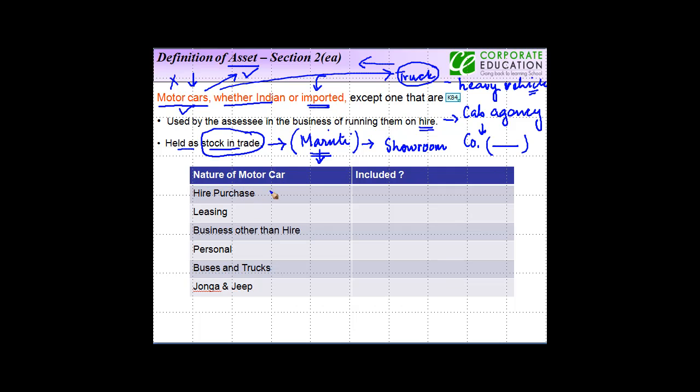So let us see certain other cases. Nature of motor car basically refers to a transaction. Now, whether or not it is included, that we will see. So the first one that we have here is the case of hire purchase. In case of hire purchase, the car is to be included in the wealth of hire purchaser.